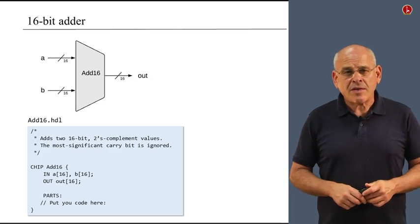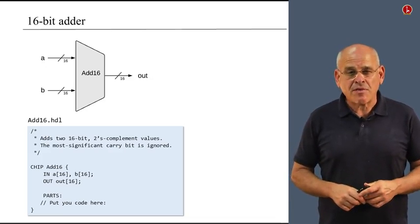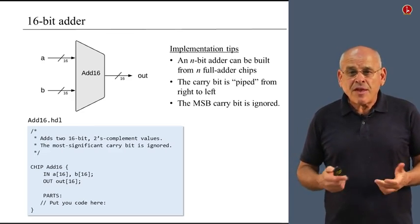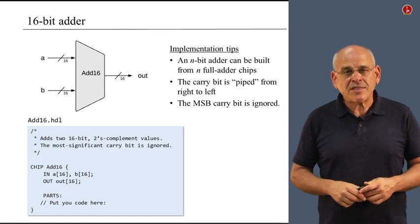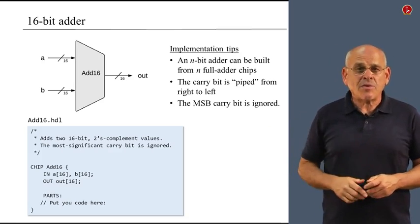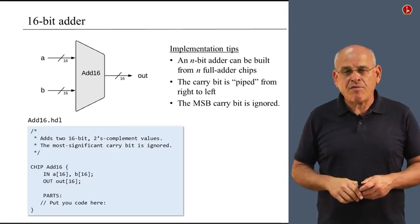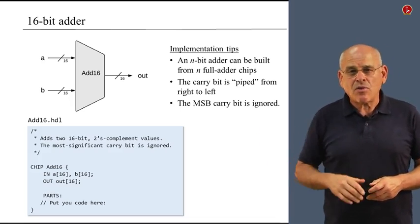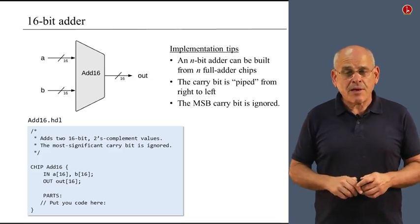The next chip we'd like to talk about is a 16-bit adder — we begin to see some industrial-strength addition. This is the stub file, and if you think about it, it can be built quite easily from a sequence of 16 full adders. You put these 16 adders one next to the other and pipe the carry bit of one adder to one of the inputs of the next adder up the significance ladder, going from right to left. Notice that according to the chip specification, the most significant carry bit is simply ignored.